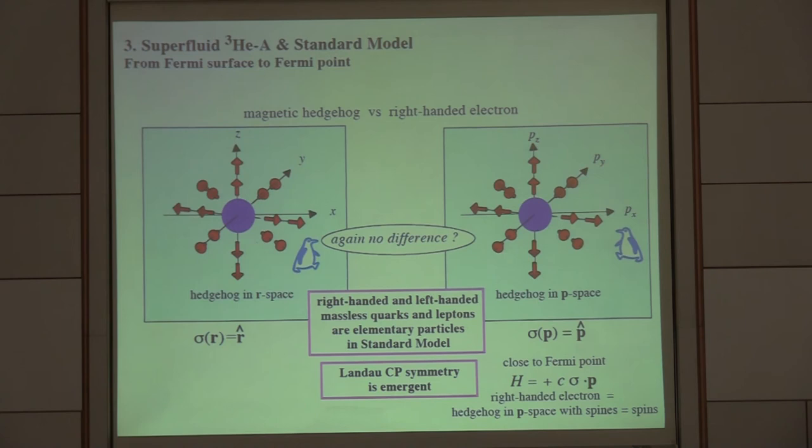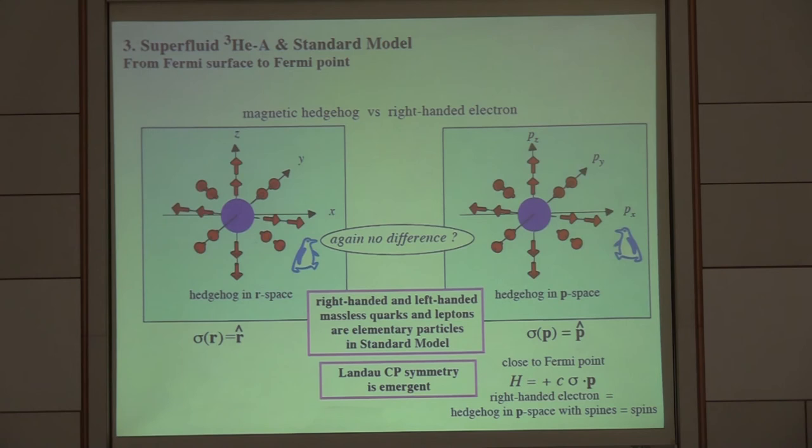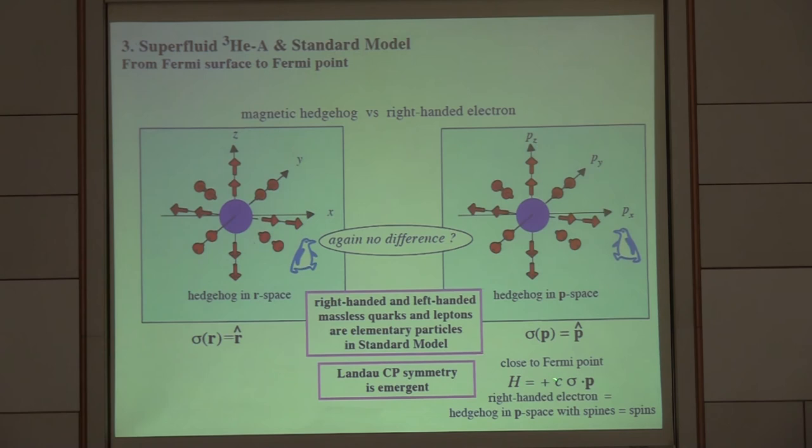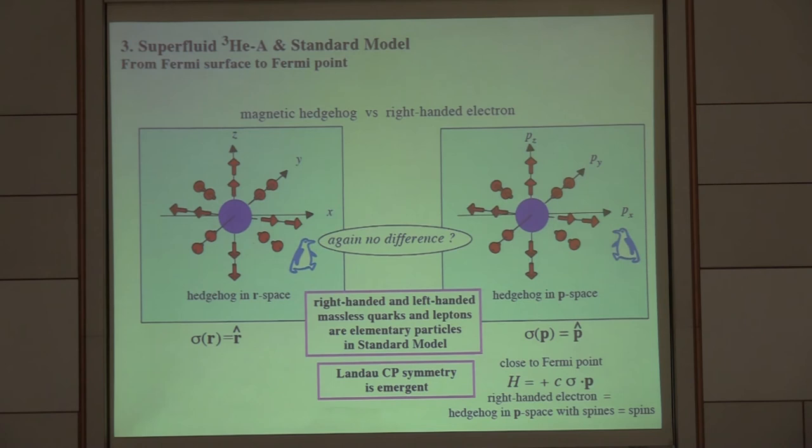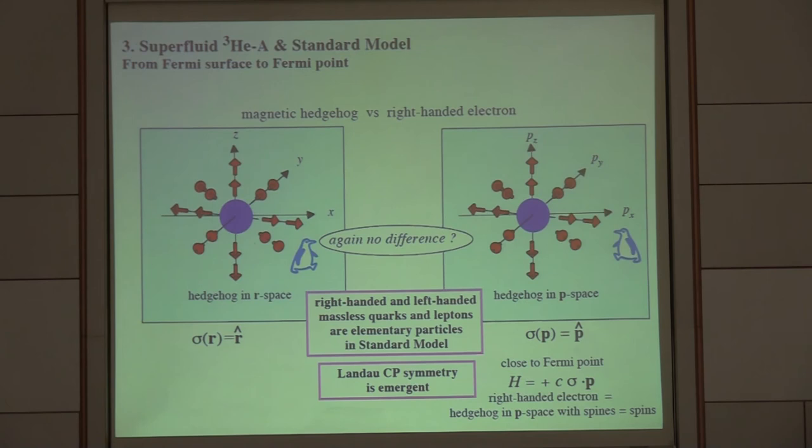The same happens in momentum space for our elementary particles, quarks and leptons, neutrinos, electrons. Consider the Hamiltonian which describes the right-handed particle: +c σ·p. This is conventional two-by-two matrix for Weyl fermions. All our elementary particles are Weyl fermions, described by either this or with minus sign for left-handed. In momentum space, momentum p acts as quantization axis for spin. For each direction of p, spin sigma should be directed along p. That's why one has the hedgehog.